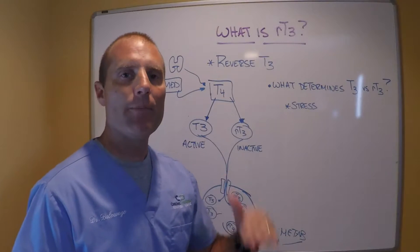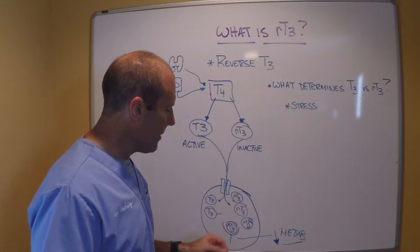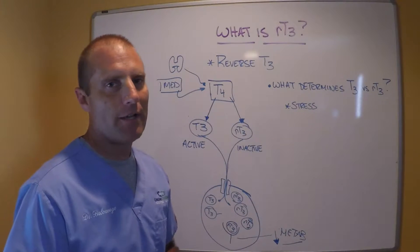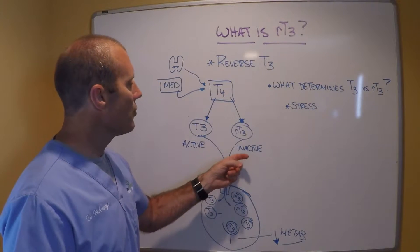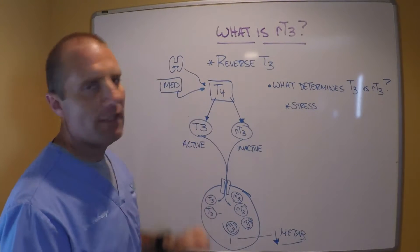If T3 binds to the thyroid receptor, your metabolism goes up, your hypothyroid symptoms go down. If reverse T3 binds to that thyroid receptor, your metabolism goes down and your hypothyroid symptoms go up. So it's really important to measure your reverse T3 so you know what's happening to the T4.